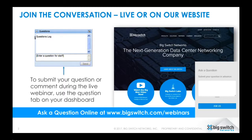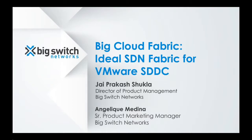Before we get started, a bit of context for those not familiar with Big Switch. Big Switch Networks is a next-generation networking company. Our mission is to redefine how networks are built, secured, and monitored — effectively disrupting the status quo of traditional networking using hardware-software disaggregation and software-defined networking. Today's webinar focuses on Big Cloud Fabric and how it integrates with VMware software-defined data center solutions.